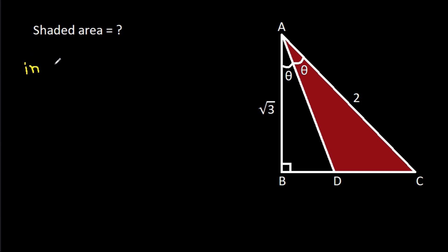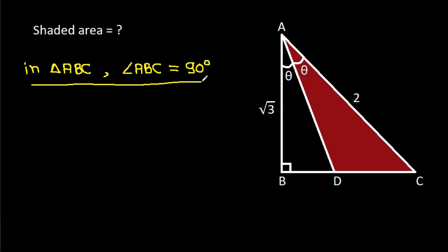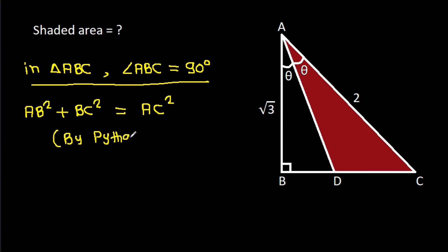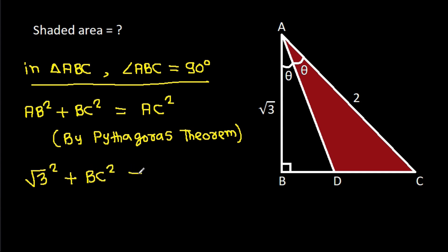In triangle ABC, angle ABC is 90 degrees. So, AB² + BC² = AC² by the Pythagorean theorem. AB is √3, so (√3)² + BC² = 2², which gives us 3 + BC² = 4.